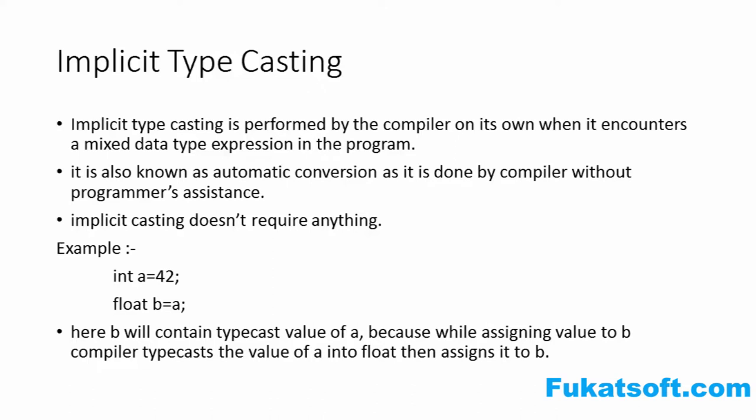In Implicit Type Casting, we don't need to do anything as a programmer. We have some expressions and some answers. They belong to a small data type, and we store them in a large data type. The answer of a large data type can be saved. Let's say our answer is short and we store it in an integer — this will automatically convert it. That's how implicit type casting is used. Here we have an example.